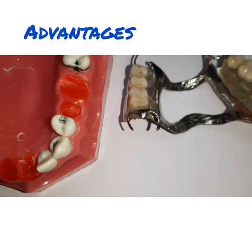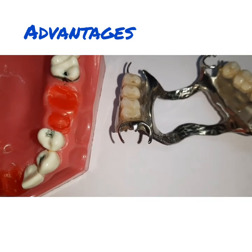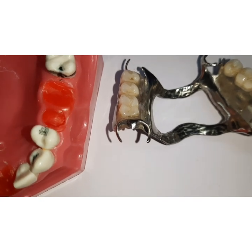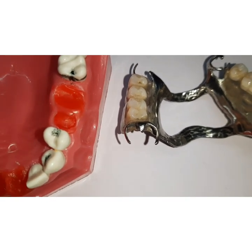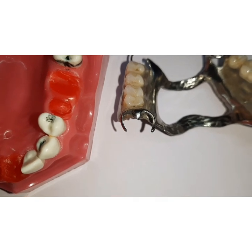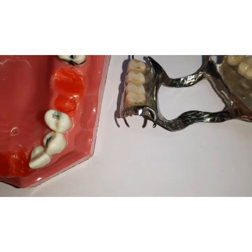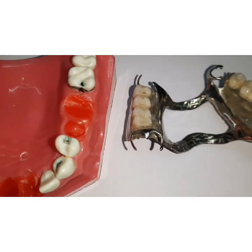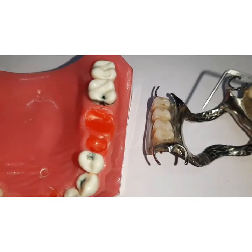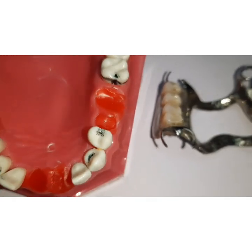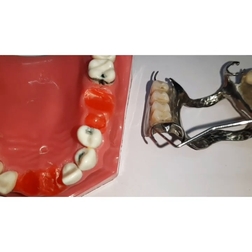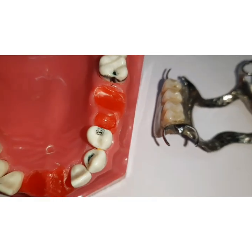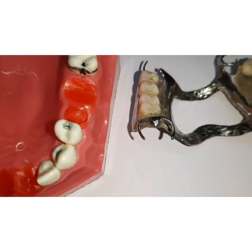The advantages of cast circumferential clasps are that they are easy to fabricate and design, easy to repair because we are giving a rigid clasp, they have less chance of food lodgement, and they provide excellent support because of the rest, vertical support, bracing — as it is 180 degrees encircling the tooth — and reciprocation provided by the reciprocal arm.